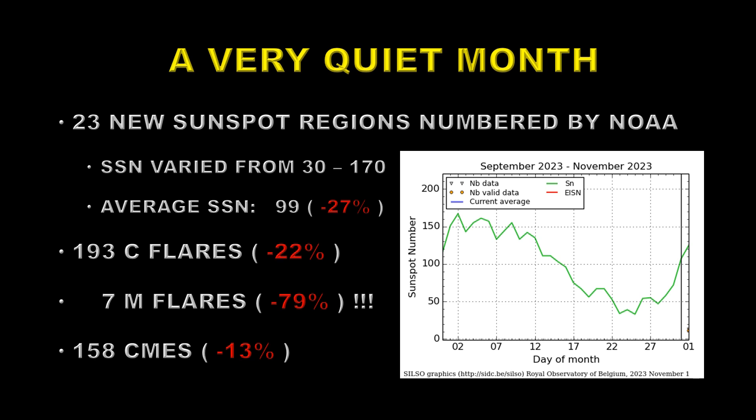We had 193 C flares, which is 22% down from September. Amazingly, we had only 7 M flares — that's down nearly 80% from the previous month. And we had 158 CMEs, which was down 13% from September. So overall, a pretty quiet month.